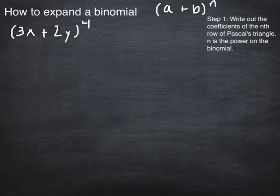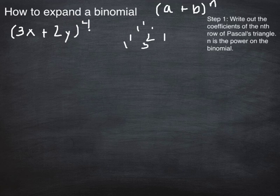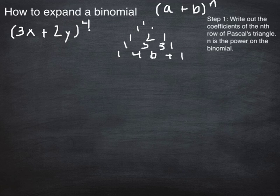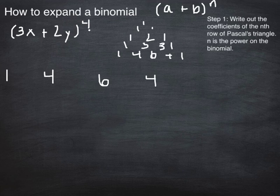So the first thing we need to do is we need to find the 4th row of Pascal's triangle. So if you write the triangle out, you get 1, 1, 1, 1, 2, 1, 1, 3, 3, 1, and then 1, 4, 6, 4, 1. So I'm going to write out those coefficients: 1, 4, 6, 4, and 1.